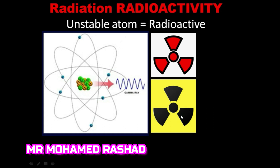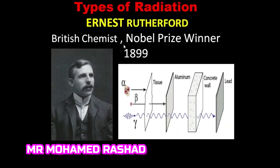Unstable atoms release energy to come to their stable state or ground state. These are the signs of a radioactive material, and you have to take care of this sign and not come near this material. That is, in short, radioactivity. In 1899, British chemist Ernest Rutherford classified the types of radiation into three types according to their penetration of material.